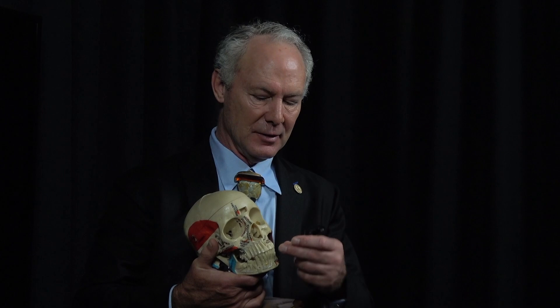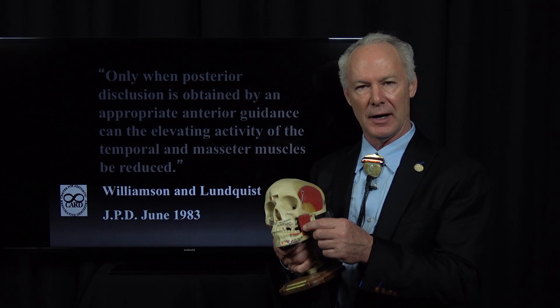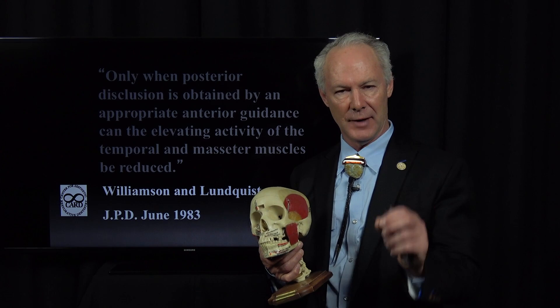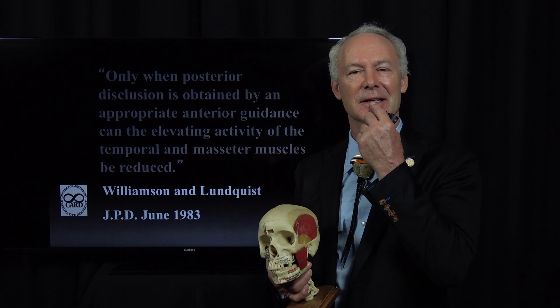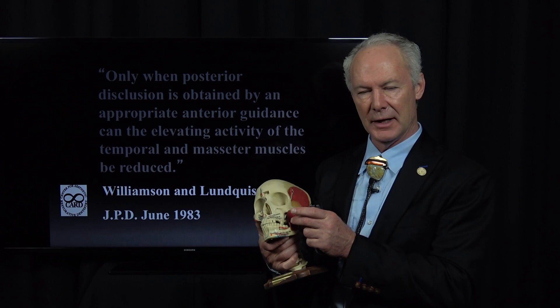If only the anterior teeth are contacting, the signals are: be dainty, be light. And so 80% of the muscle fibers will not fire — only about 10 to 20% of the muscle fibers fire when only the anterior teeth are contacting, such as when you're incising something with no food between the posterior teeth. That's why a patient tends to break teeth when biting on things with their posterior teeth — because all the muscle fibers are firing.